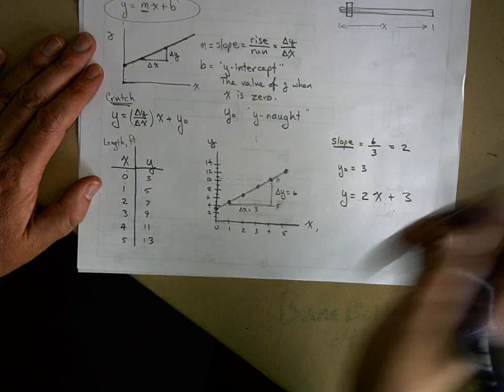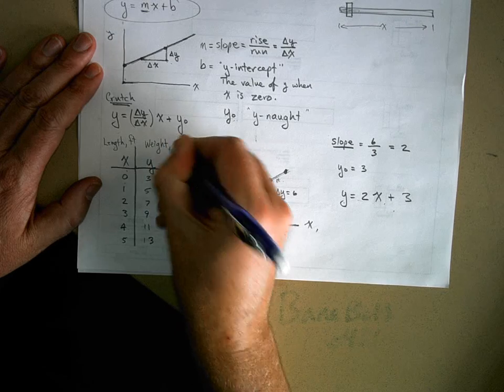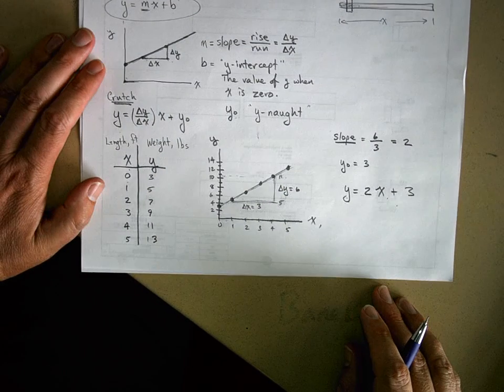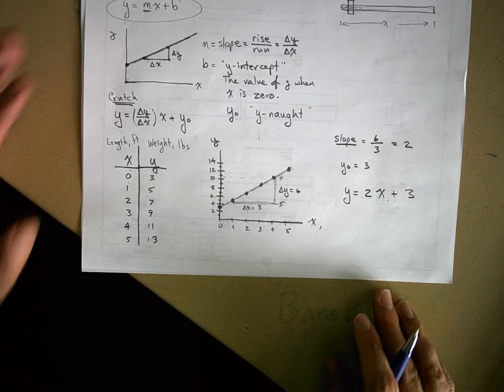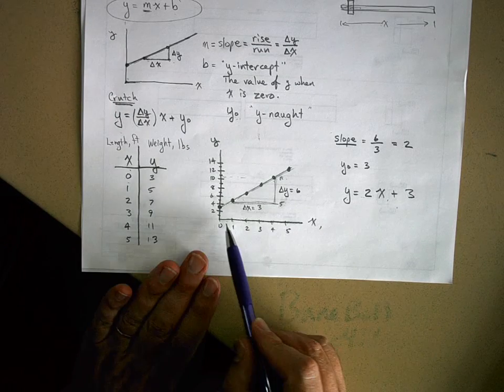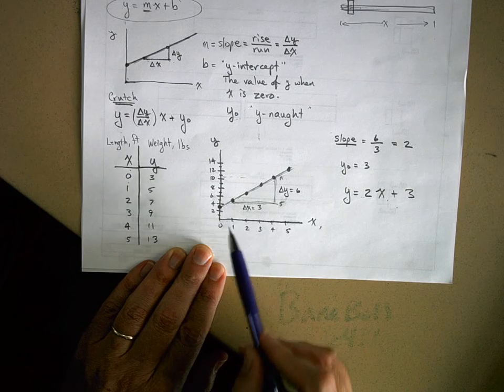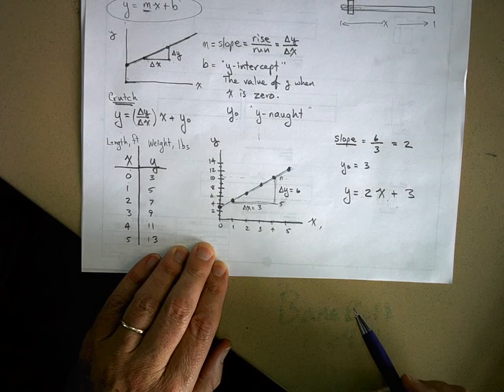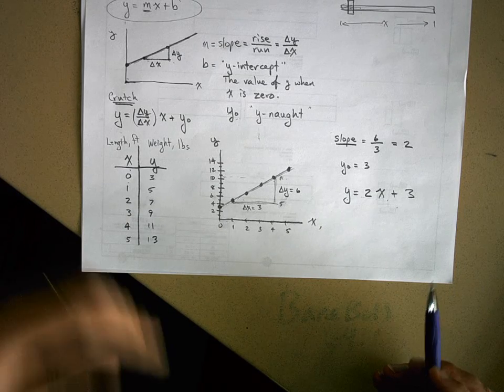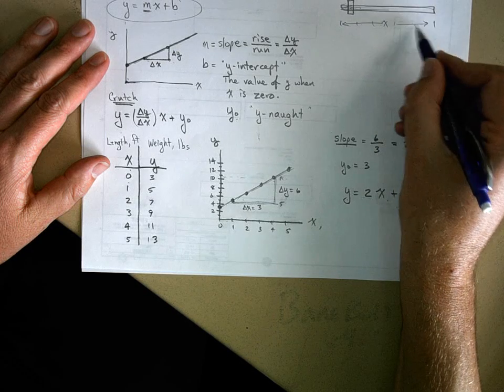And let's say the weight here, this is going to be weight in pounds. Again, I'm offending every physics teacher in the country by using that. So when we graph this thing, we have a graph for the weight of the object in pounds as a function of its length. So we measure it at one foot, two feet, three feet, four feet, five feet.